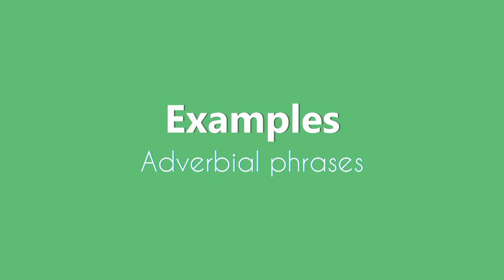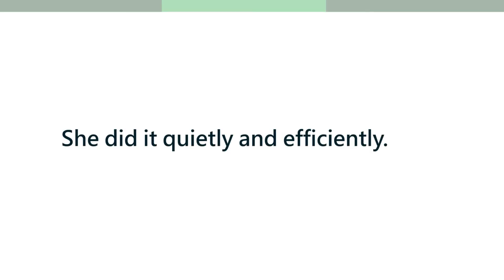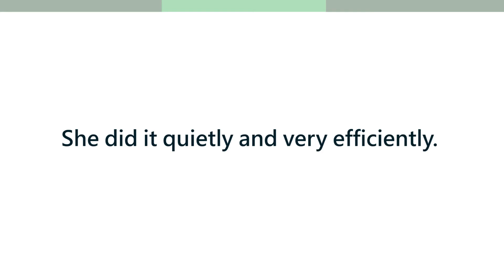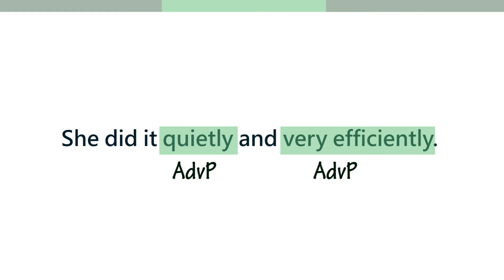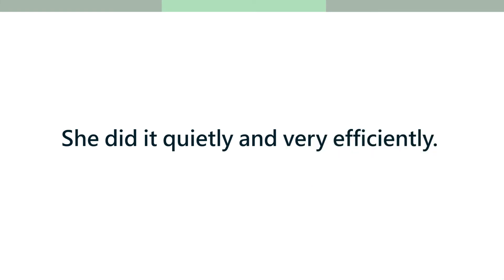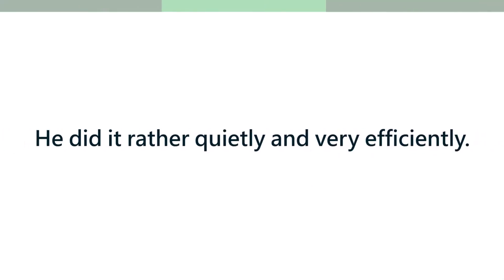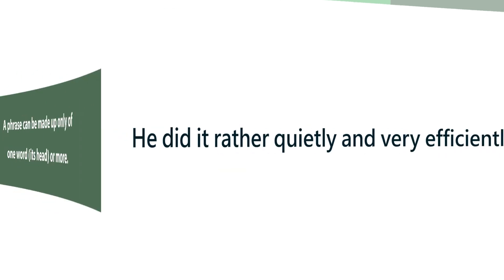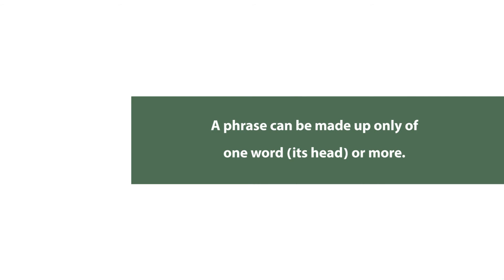Another example: how to coordinate adverb phrases. 'She did it quietly and efficiently' — 'quietly' is an adverb phrase and 'efficiently' is an adverb phrase. You could even say 'quietly and very efficiently,' which clarifies that 'very efficiently' is an adverb phrase because it contains a degree word. Or 'rather quietly and very efficiently' — the point is an adverb phrase that consists of just one word is still a phrase; it's a phrase consisting only of the head, which is the adverb.